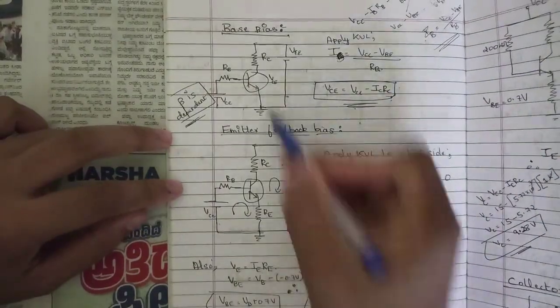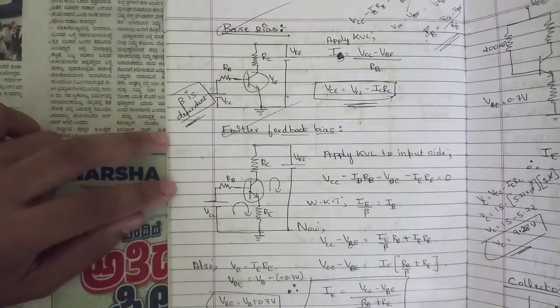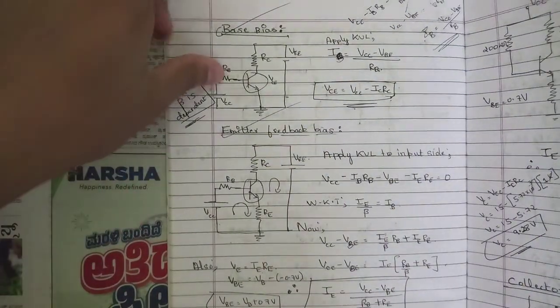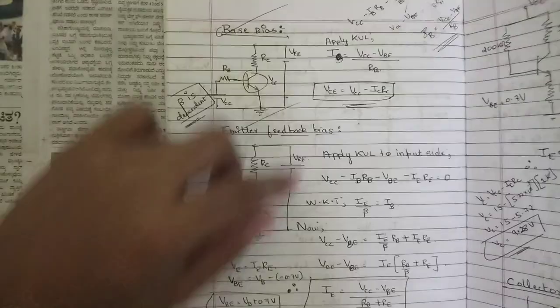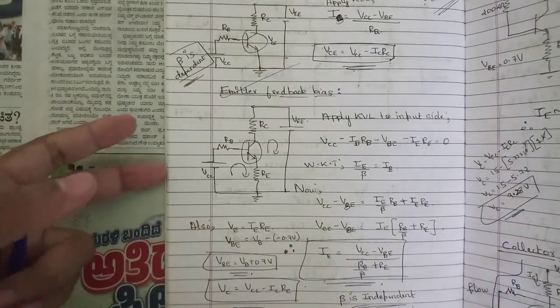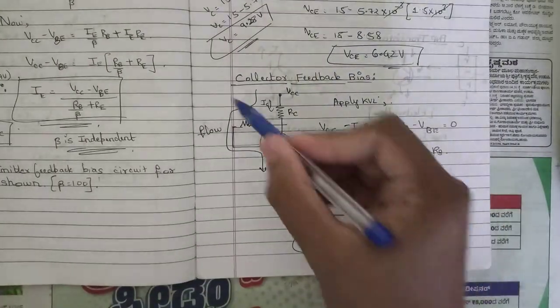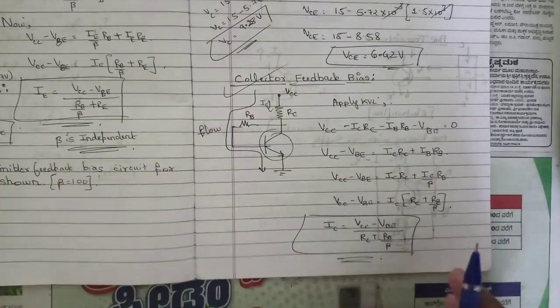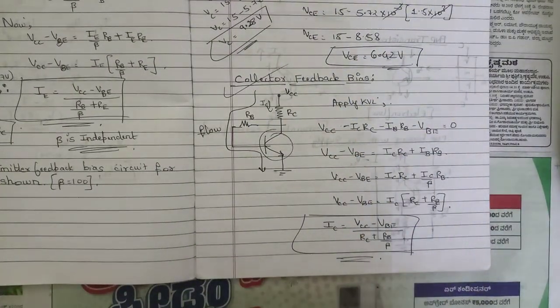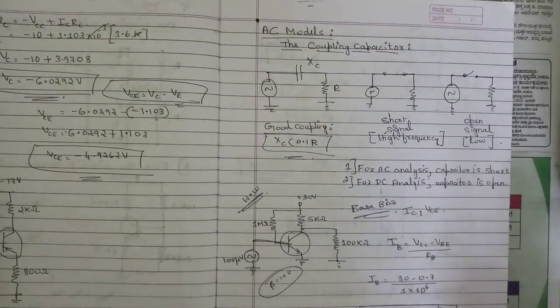Questions related to the base bias circuit, emitter feedback bias circuit, and collector feedback bias circuit will also be asked. Their formulas for emitter current, collector current, and all related expressions are important. These three circuits are very important, so please note them down.